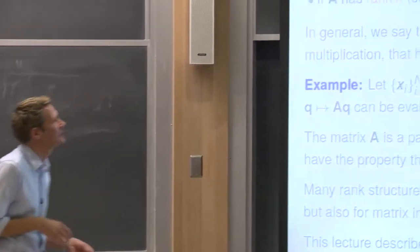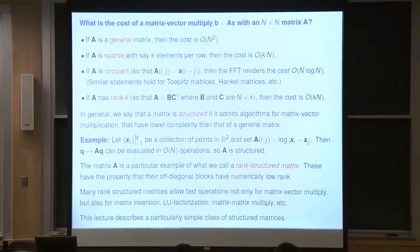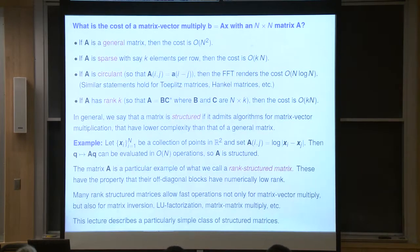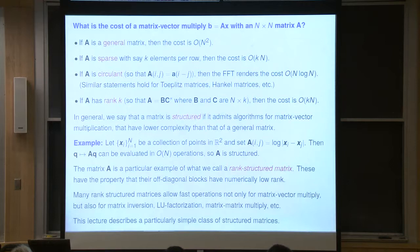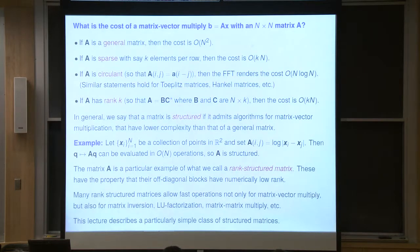There's a concept of a matrix having structure — by that I mean less than n-squared complexity. You can store it in fewer than n-squared floating point numbers, or apply it in fewer than n-squared operations. A general matrix scales as n-squared. Well-known structured matrices include sparse matrices with k non-zeros per row, allowing matrix-vector multiply in kn operations.